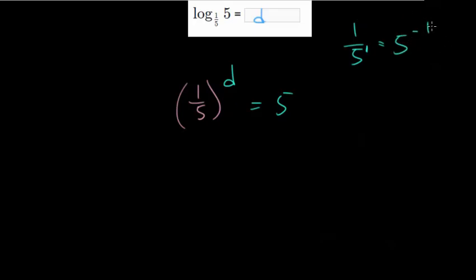Since raising something to the negative 1 power just means divide by that number one time. So these are equivalent, we can rewrite this as 5 to the minus 1 to the d power. And this is equal to 5. And remember when you have an exponent to an exponent that you're just multiplying.